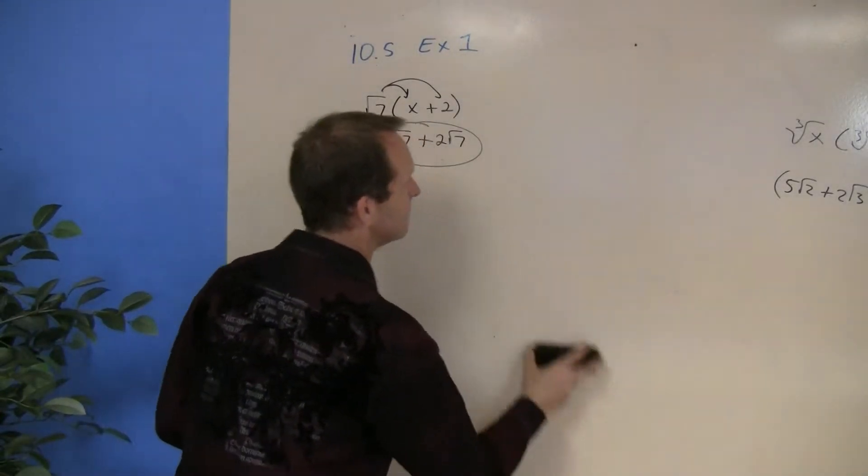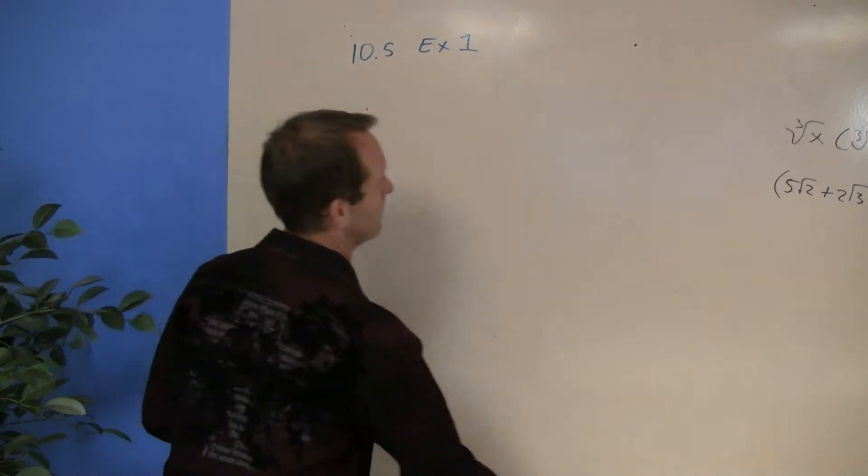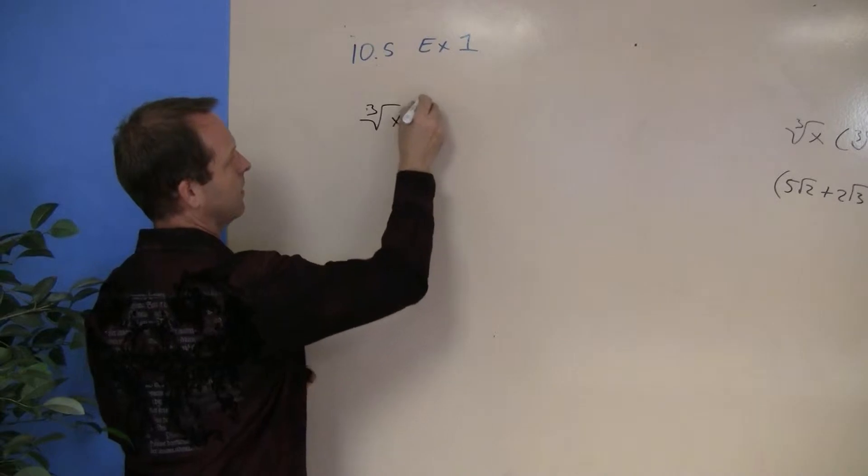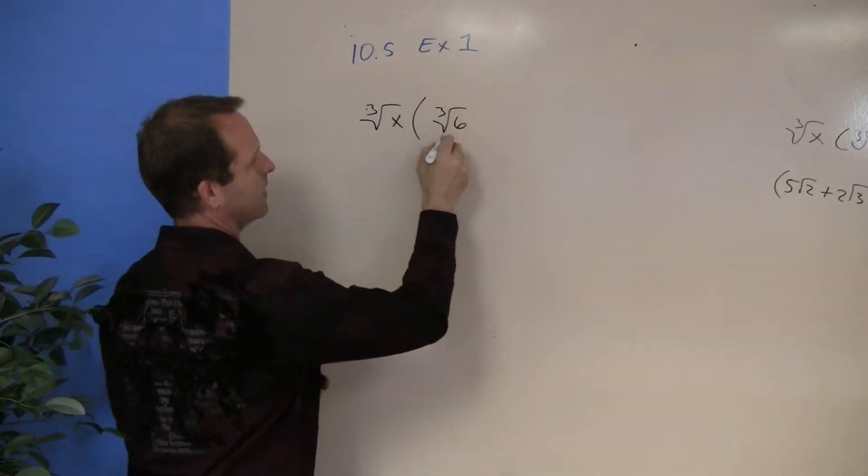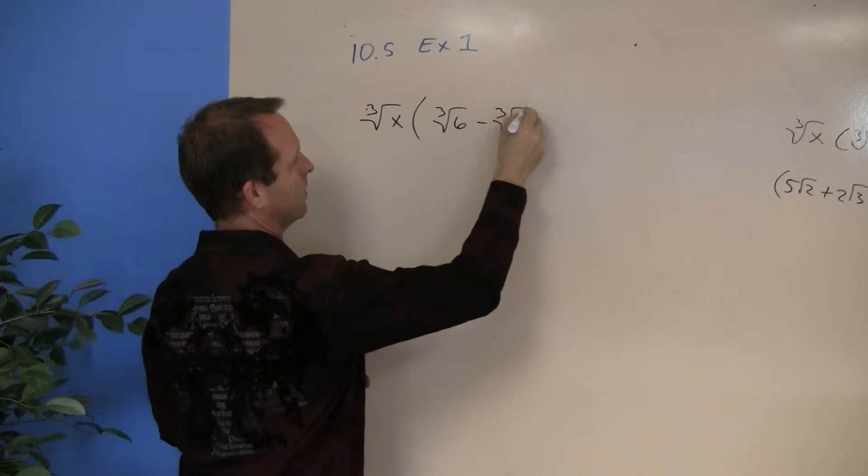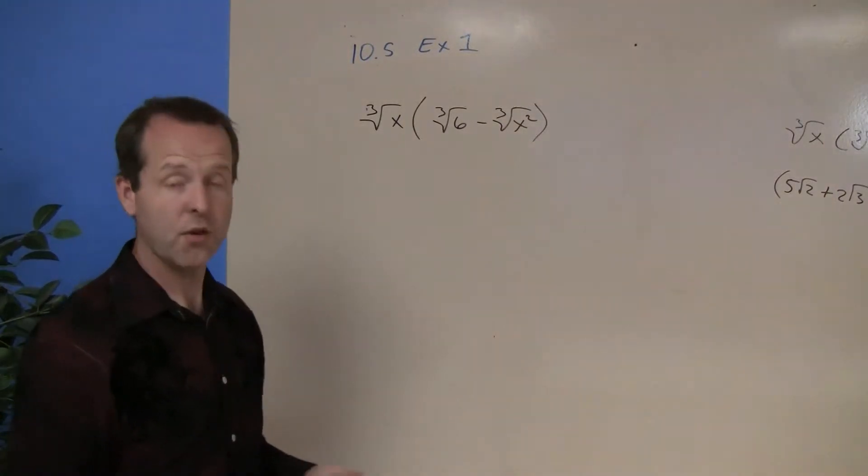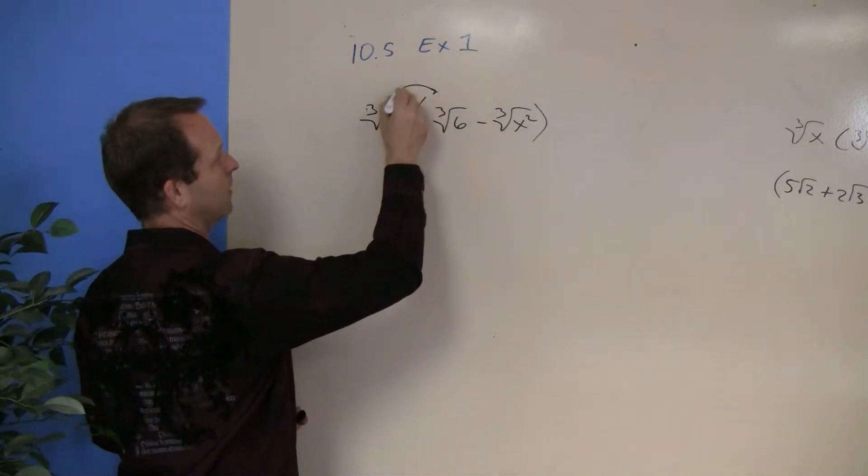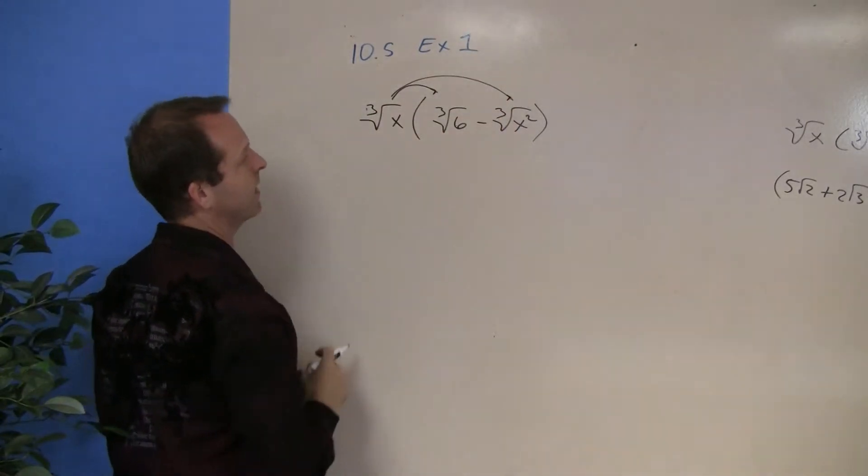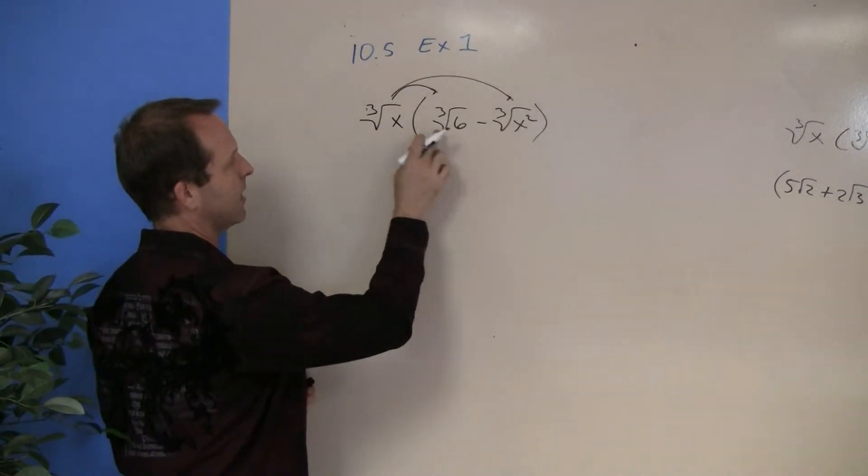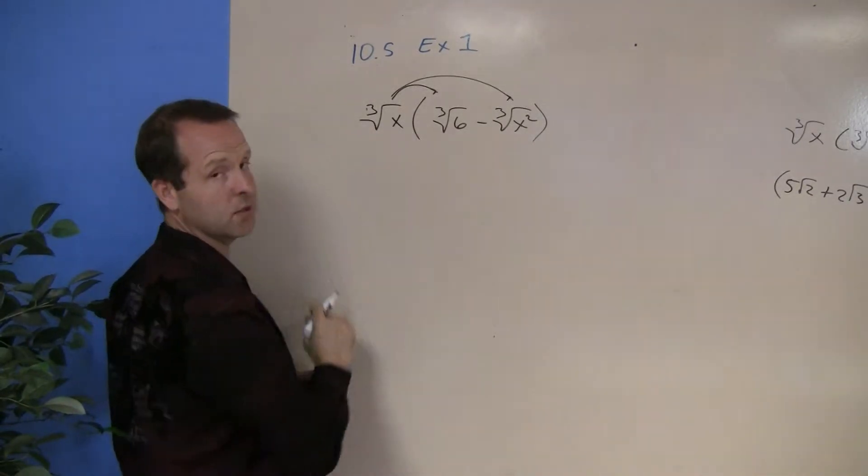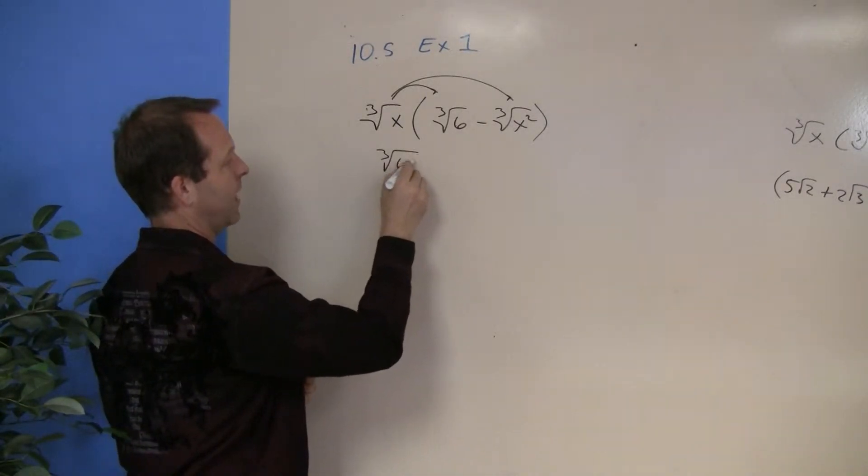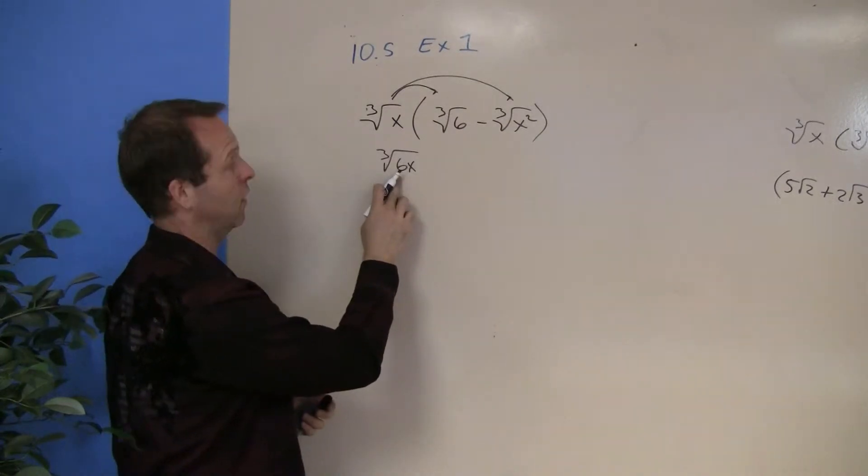Let's look at another example. The cube root of x times the cube root of 6 minus the cube root of x squared. Another distribution problem. I'm going to multiply this first term to both the first and second aspects of that second term. So a cube root of x times the cube root of 6. Well, I can multiply them because they're the same indexes. So it becomes the cube root of 6x or x6. I just put the 6 first.